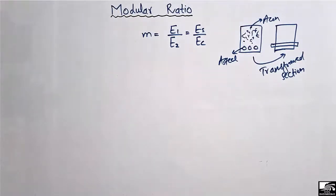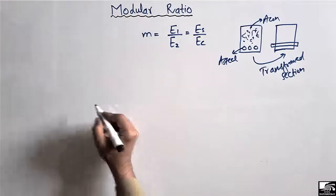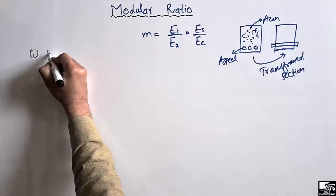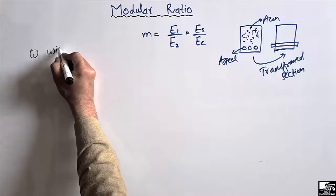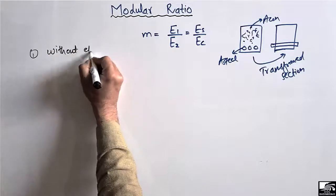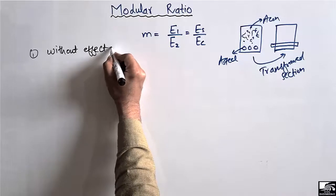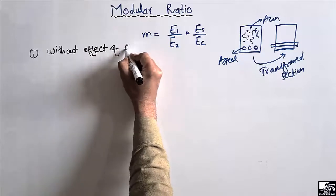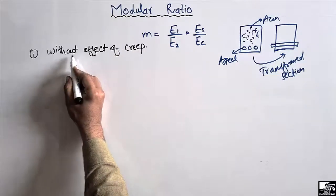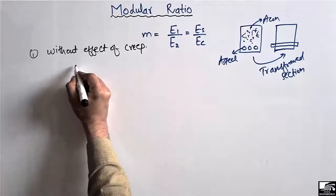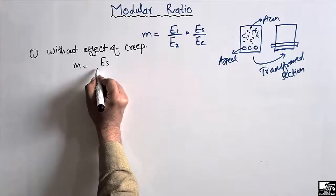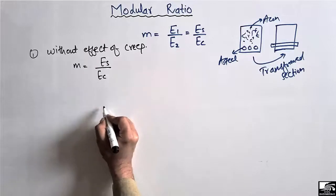There are mainly three formulas for the modular ratio. The first one is used without the effect of creep — when we don't consider any effect of creep or shrinkage. In this case, we use the ratio of the elasticity of steel to the elasticity of concrete.